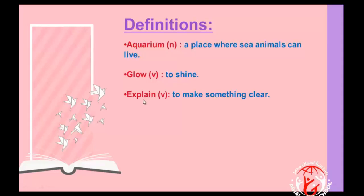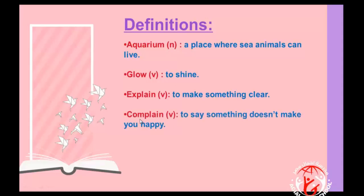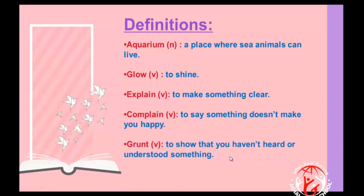The third one is 'explain' — it's a verb meaning to make something clear. After that we have 'complain' — also a verb. Complain means to say something that doesn't make you happy; you are not happy about it so you complain. Next is 'grunt' — it's a verb meaning to show that you haven't heard or understood something.